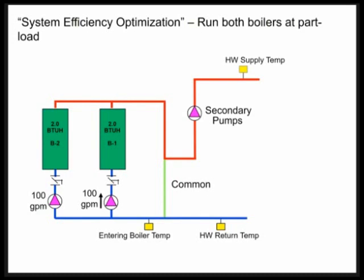You've got to pay attention to the return water temperature in the primary, especially when the primary flow is greater than secondary. With the constant flow primary, variable flow secondary, system efficiency staging might not be the most efficient. Let's look at that.